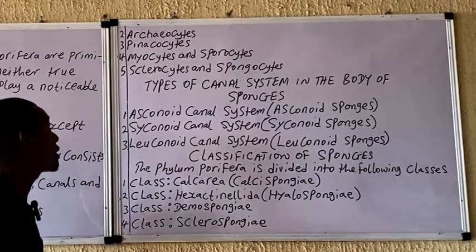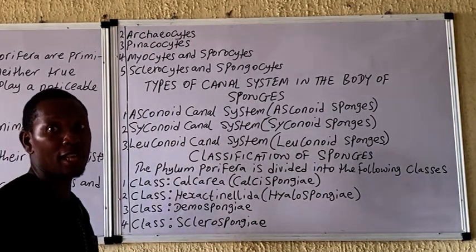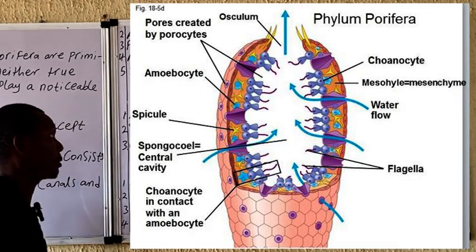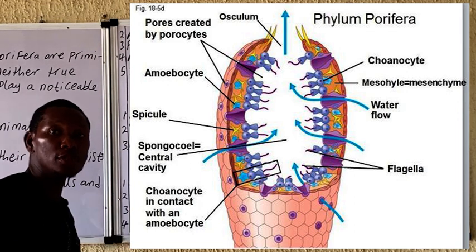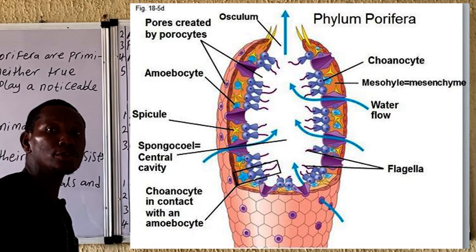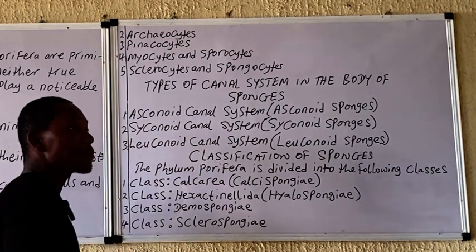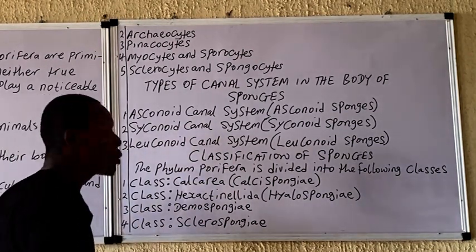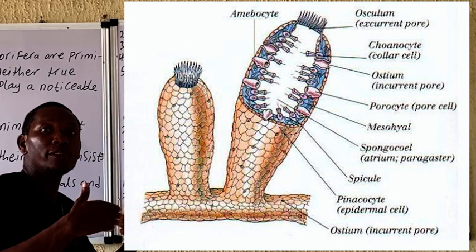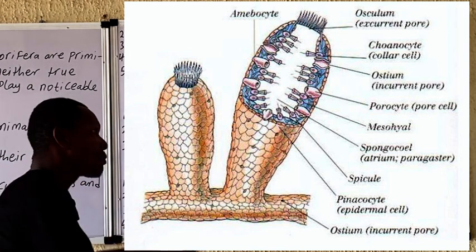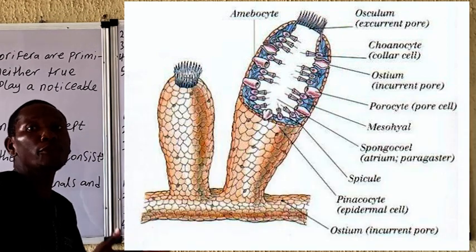The second type of cell is the archaeocyte. The archaeocyte comprises amoeboid cells present in the mesohyl, migrating through it. As seen in the diagram on the board, these cells are responsible for intracellular digestion of food materials. This cell can also differentiate into various types of cells, such as the sclerocyte that produces the spicules, and the spongocyte that produces the spongin.